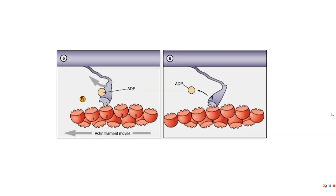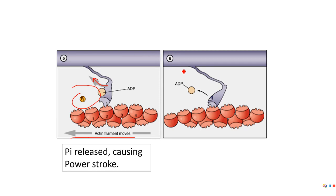The next thing that happens is phosphate leaves. When it leaves, the filament moves because the myosin head is returning to its original form — it's uncocking. We call this the power stroke. The phosphate is released, the power stroke occurs, which moves actin towards the M line.